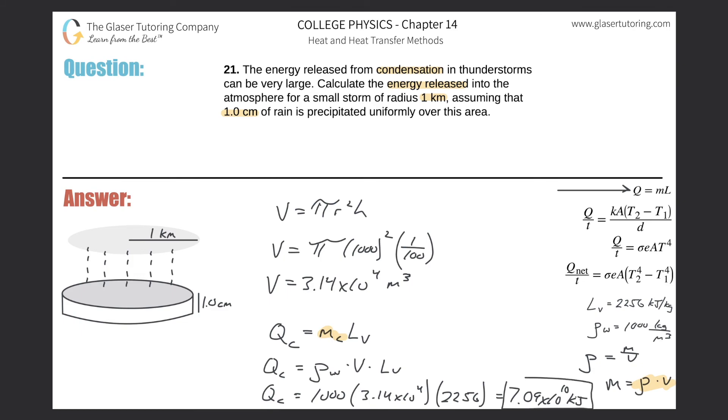It doesn't say what units we need, so that's fine. If you wanted to convert that into joules, just multiply by a thousand. Then it would be 7.09 times 10 to the 13th joules. That is a tremendous amount of energy.